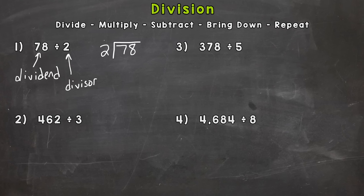So we're splitting 78 into two groups. So we have the problem set up. So now we're ready to start the process. And the first step is divide. So we find the first number in our dividend or the inside number which is the 7.